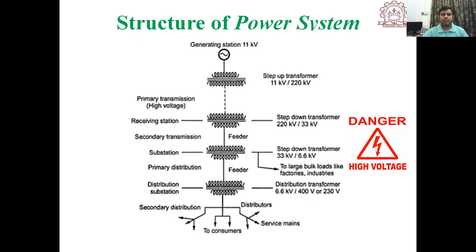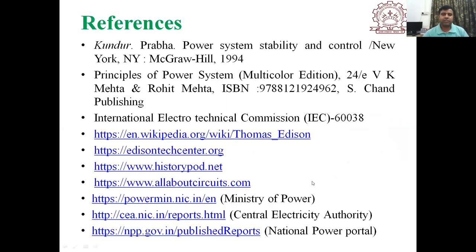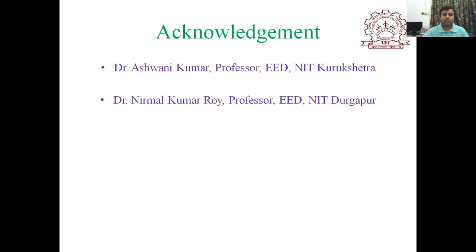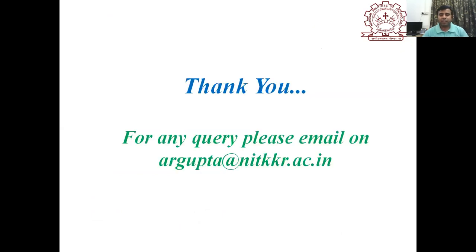I hope all of you have understood the historical background of the electrical power system. With this we come to the end of today's lecture. Some references students may refer to include 'Power System Stability and Control' — the first chapter covers the history of power systems. Additional references include the Ministry of Power, the National Power Portal, AllAboutCircuits.com, and the Edison Tech Center. For any queries, students may email on the provided email ID. Thank you everyone.